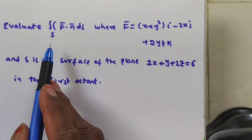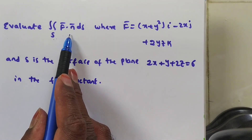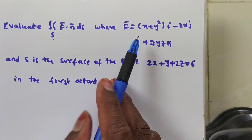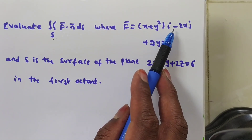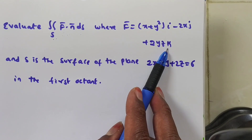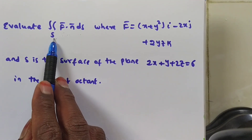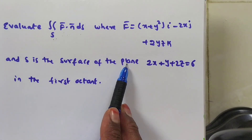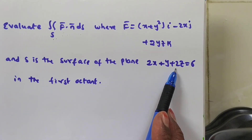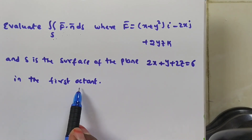Surface integral evaluation is nothing but we have to do double integral over S: f̄ · n̄ dS, where f̄ is a vector point function given as (x + y²)i + (y − 2x)j + 2yzk. S is the surface of the plane 2x + y + 2z = 6 in the first octant.